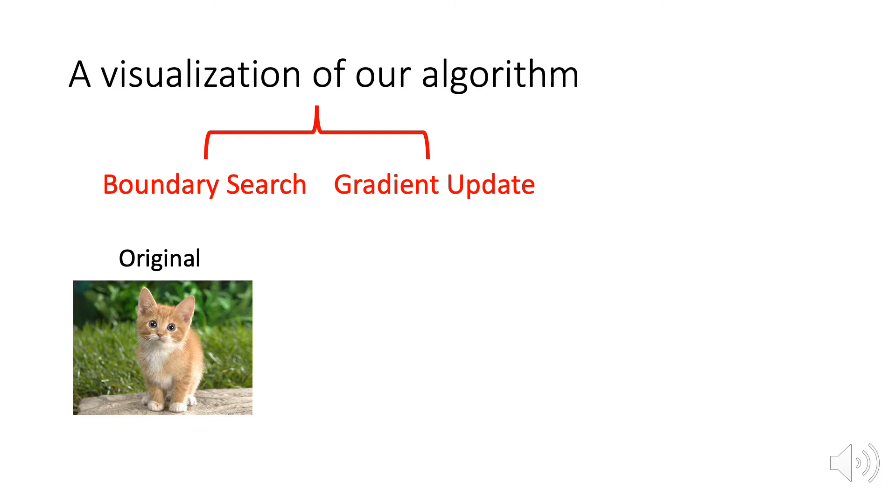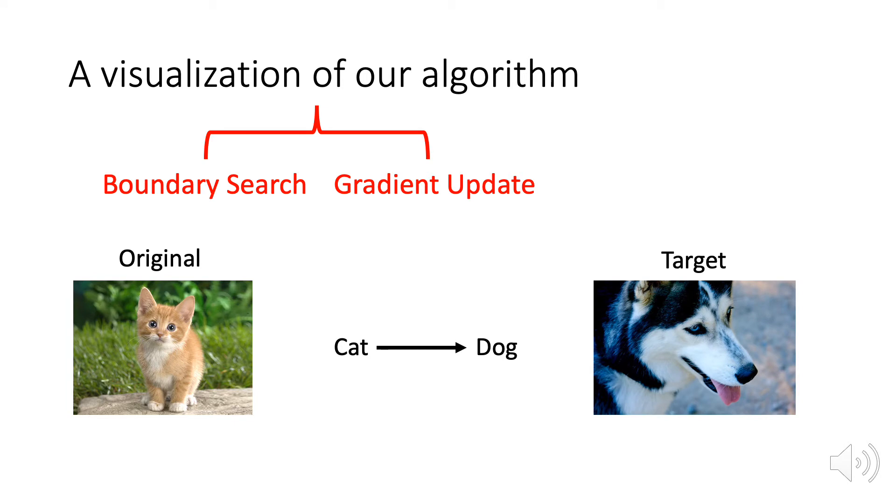As an example, we have an image classified as cat. Our goal is to fool the model as a dog. The algorithm starts with an image classified as dog.